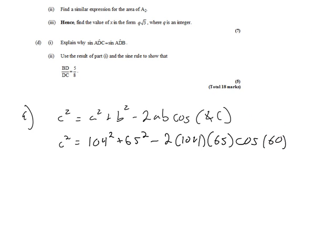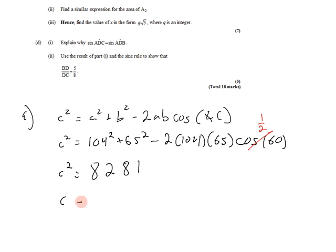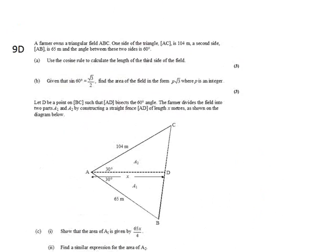We'll take away 2 times 104 times 65 times the cosine of 60 degrees. The cosine of 60 degrees is a major angle we're responsible for knowing — it's one-half. 104 squared is not something we'd calculate without a calculator, so when we plug in, we find that C squared equals 8,281, meaning that C equals the square root of that: 91 meters. Since we're talking about lengths, we discard the negative result.